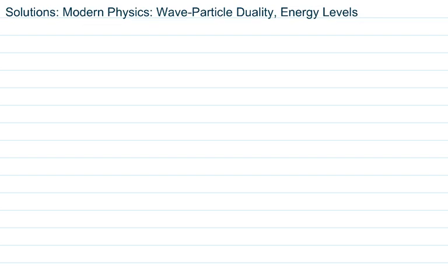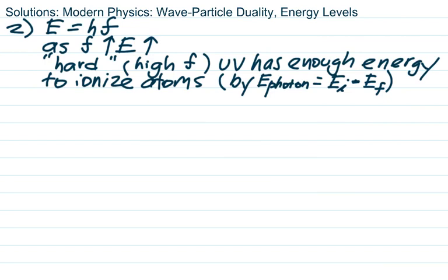We'll start with number two on the wave particle duality worksheet. The question says exposure to UV radiation can damage skin, but exposure to visible light does not damage skin. State one possible reason for this difference. They're probably looking for the most obvious reason, and it has everything to do with how energy is directly proportional to frequency. The energy of a photon is directly proportional to its frequency.